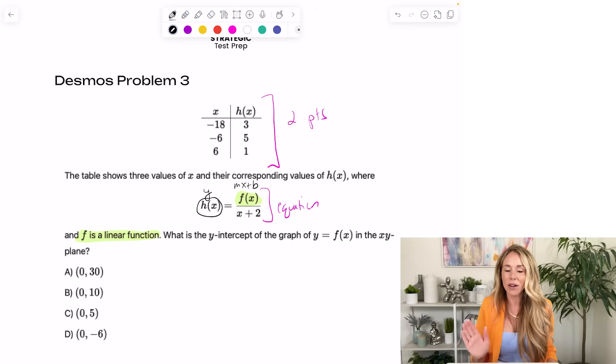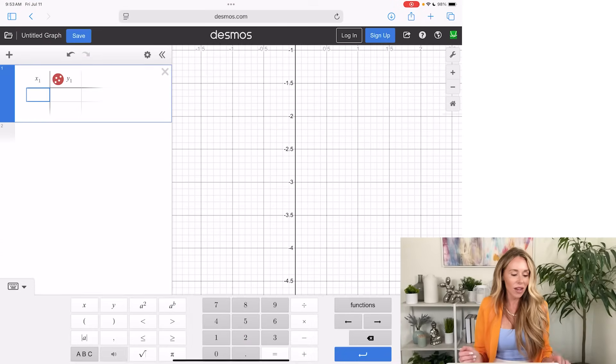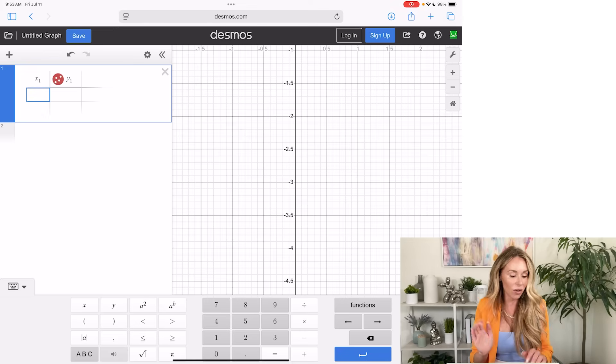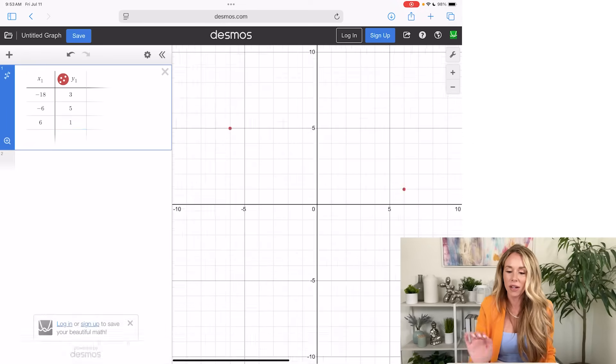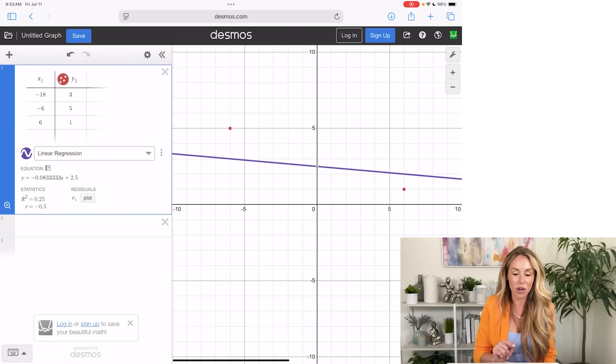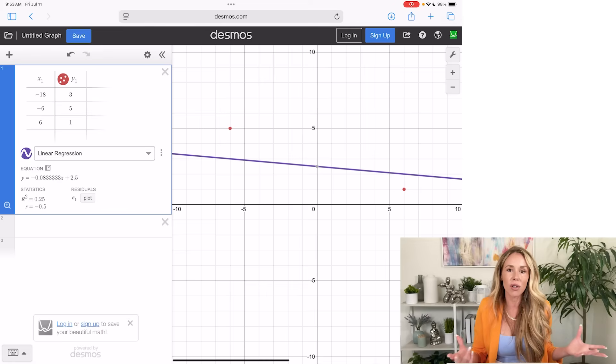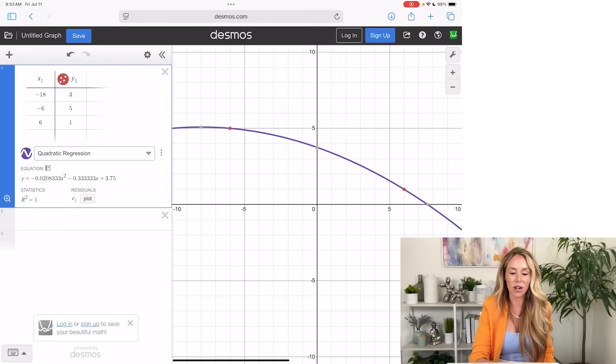So let me just show you how to do regression in steps. The first thing we're going to do is we're going to set up a table of values. So when I go to Desmos, I'm going to type in the word table and it will pop up. And then what I'm going to do is I'm going to just start typing in those sets of coordinates. So I have negative 18, three, I have negative six, five, and I have six, one. Perfect.